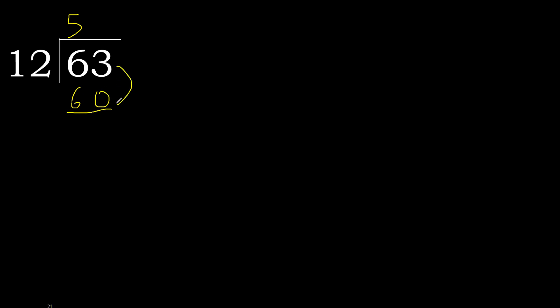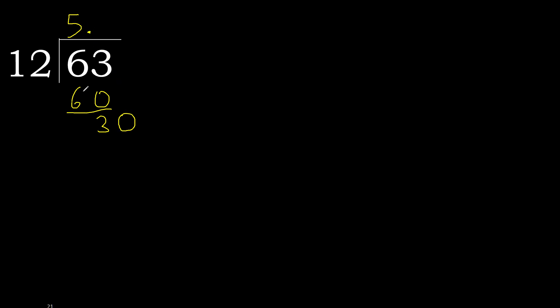Subtract: 63 minus 60 is 3. Next, there is no more digit, therefore we complete with a decimal point. Bring down 0, giving us 30.